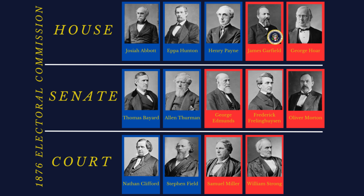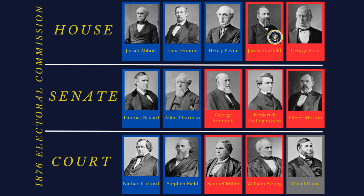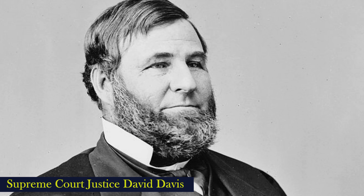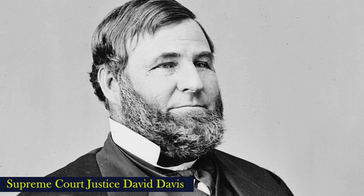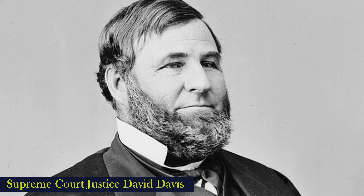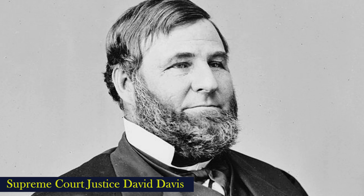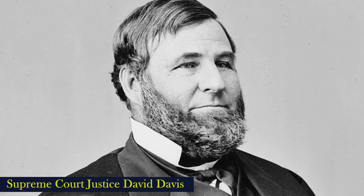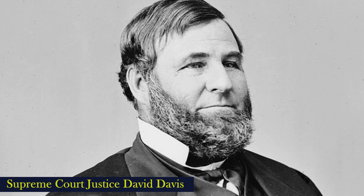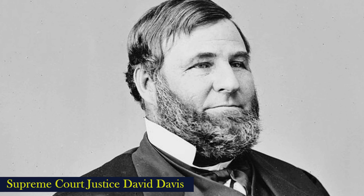With an unprecedented constitutional crisis looming, Congress somehow agreed to pass a law on January 29, 1877, 34 days before the inauguration, to form a 15-member electoral commission to settle the dispute. Ten of the 15 members came from Congress, with five from each chamber. The majority would select three and the minority two. Since the Republicans controlled the Senate and the Democrats controlled the House, the first ten spots were evenly split five-five. The last five spots were made up of Supreme Court justices: two Republicans and two Democrats. The fifth would be chosen by the other four. The 15th member was critical.